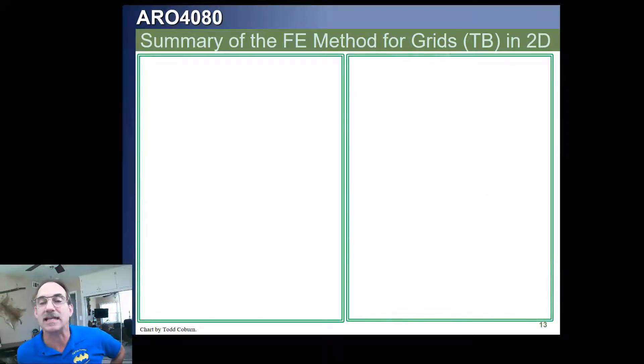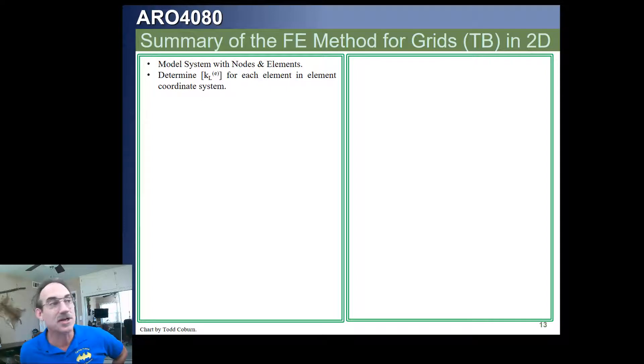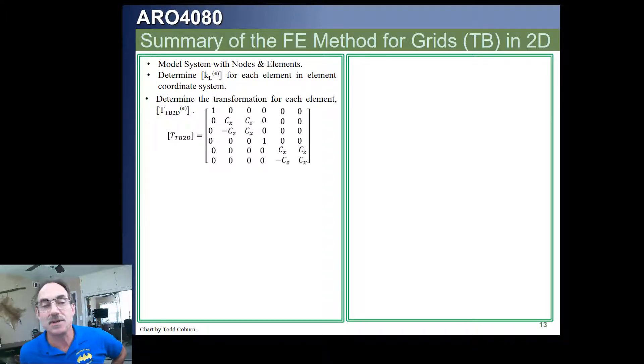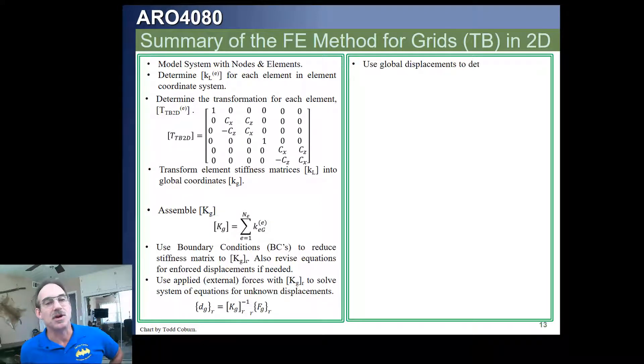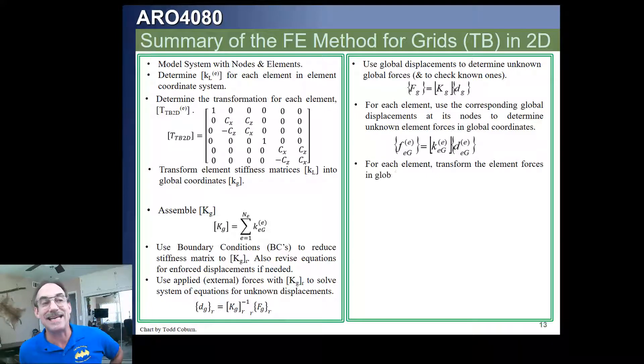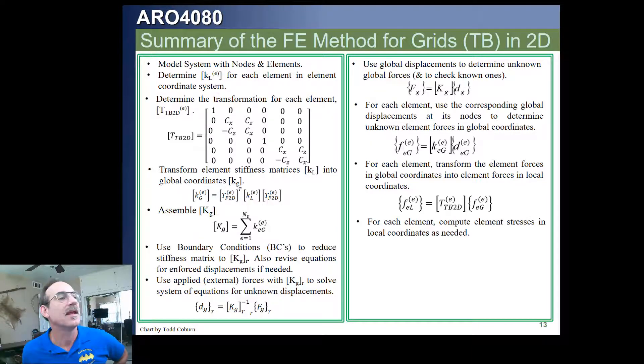Therefore, we can summarize our method, and this is starting to get to be old hat, because we're doing it kind of the same way. We're modeling our nodes and elements. We define our stiffness matrix for each and every element, but now it has both torsional and bending stiffness. We define our transformation matrix, or calculate it for each and every element. And then we can transform our local stiffness matrix into a global one, and assemble our global stiffness matrix. We then reduce our system with our boundary conditions, solve for displacements, use the displacements to get the external forces, use the displacements again, the ones corresponding with each element to calculate the global forces in each element, which we can then transform into the local values like this. And that's all there is to it.